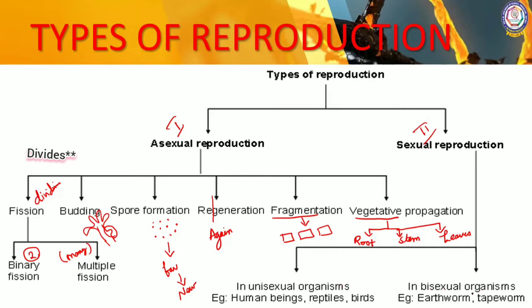Uni means one — a unisexual organism has only one sex organ. Bisexual means the individual has two sex organs. We can also call bisexual organisms hermaphrodites. Examples of unisexual organisms include human beings, reptiles, and birds. Examples of bisexual organisms include earthworm and tapeworm.